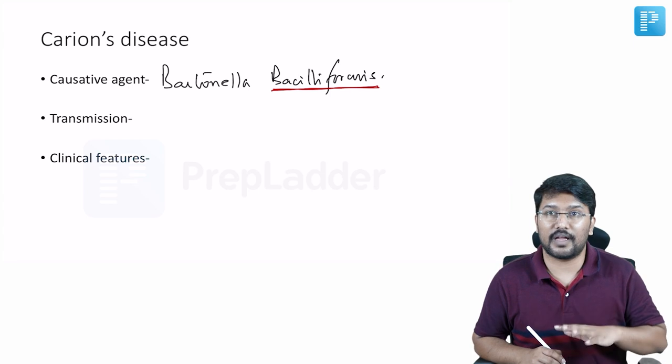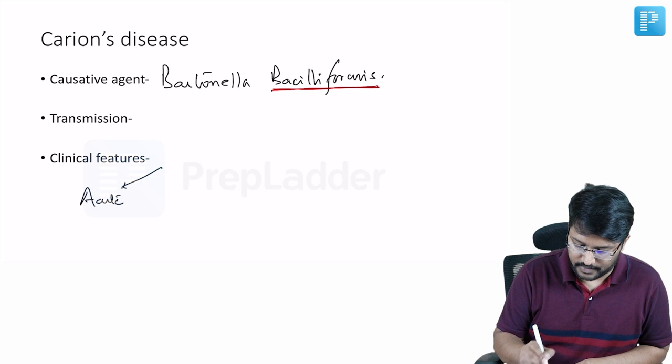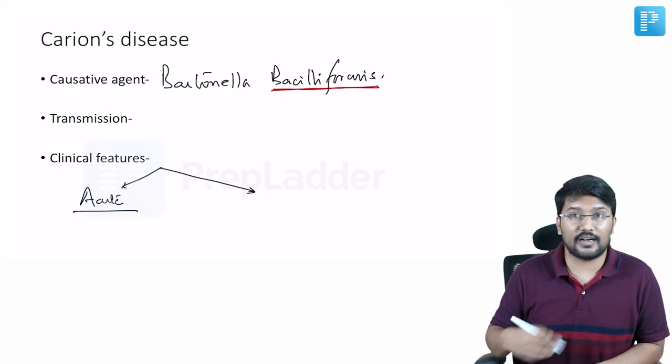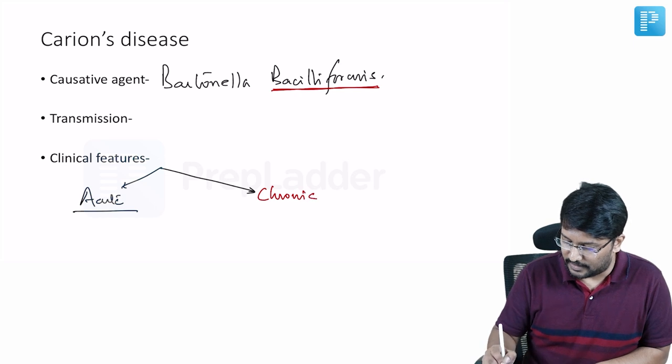So I told you that this is a biphasic illness. So that means there is an acute phase and there is a chronic phase. Acute phase is mainly a hematological illness and the chronic phase is basically a cutaneous illness.